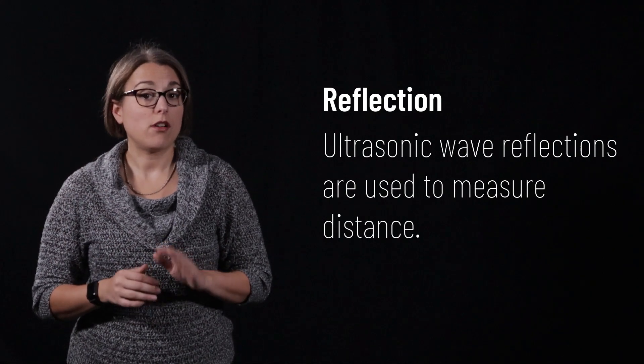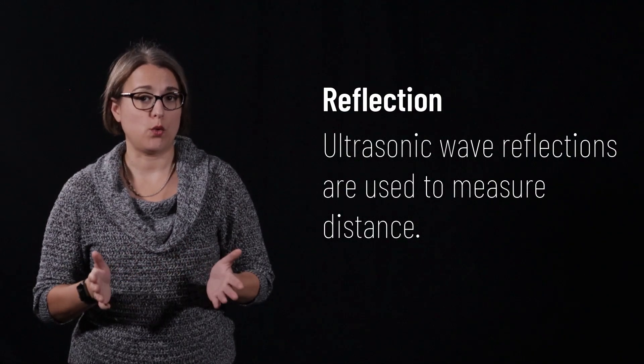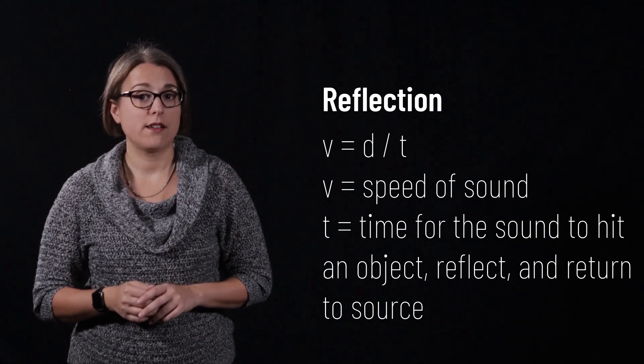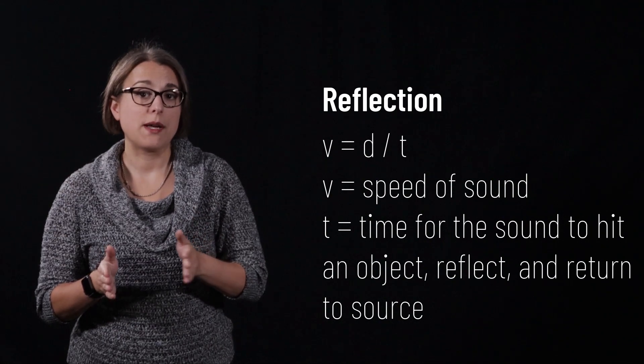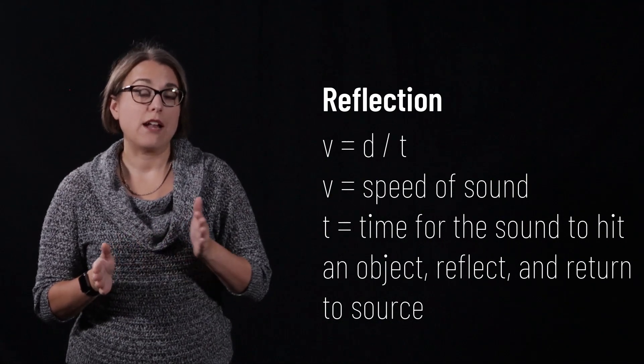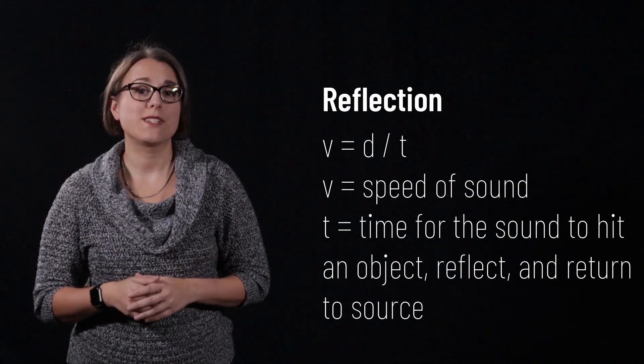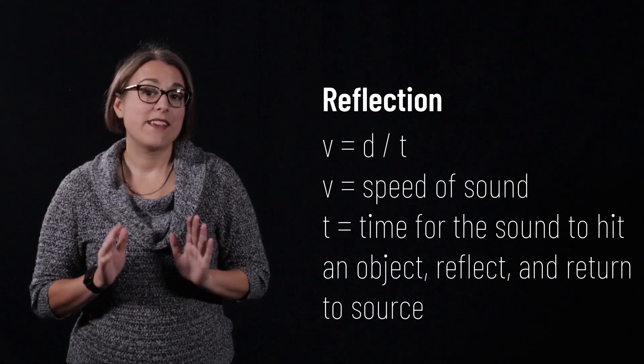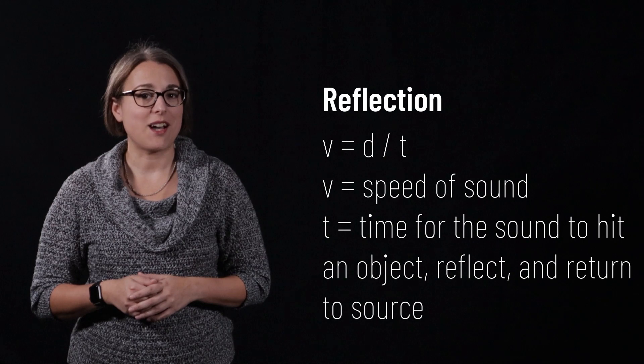The reflection of ultrasonic waves is frequently used to determine the distance between two objects. If the temperature is known, the speed of sound can be calculated, and the amount of time it takes for a wave to leave an ultrasonic sensor, bounce off of an object, and return to the sensor can be used with the velocity equals density divided by time equation to determine distance. In fact, this is how the motion sensors used in many lectures and labs in this class operate.